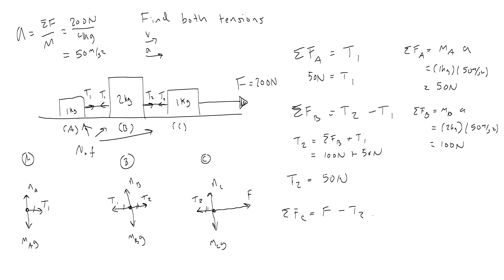And if I want to take my net force C equation to prove that this is correct, remember F minus T2, well, I know that the net force on C is the mass of C times the acceleration, so 1 kilogram times 50 meters per second squared is 50 newtons. And then I think, does 200 newtons minus T2, that's 150, equal 50 newtons? It does. So it checks out. Smiley face. Congratulations.